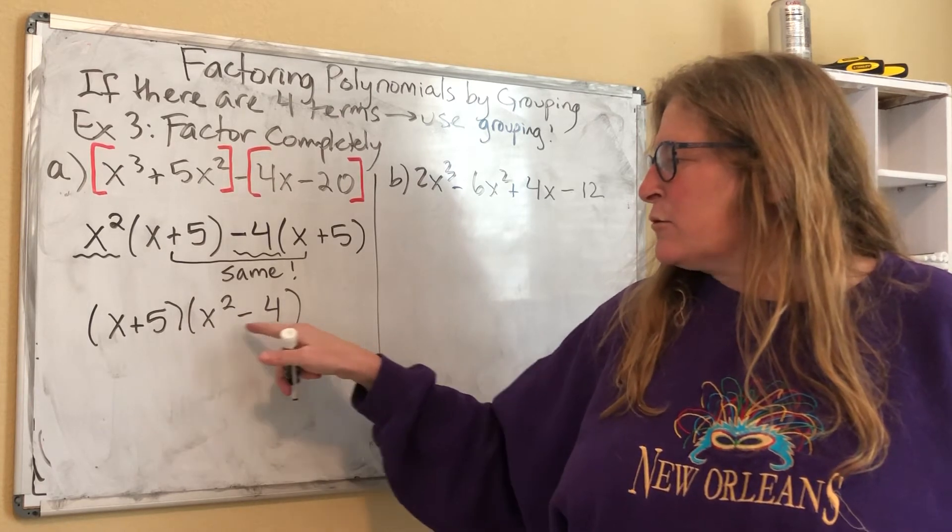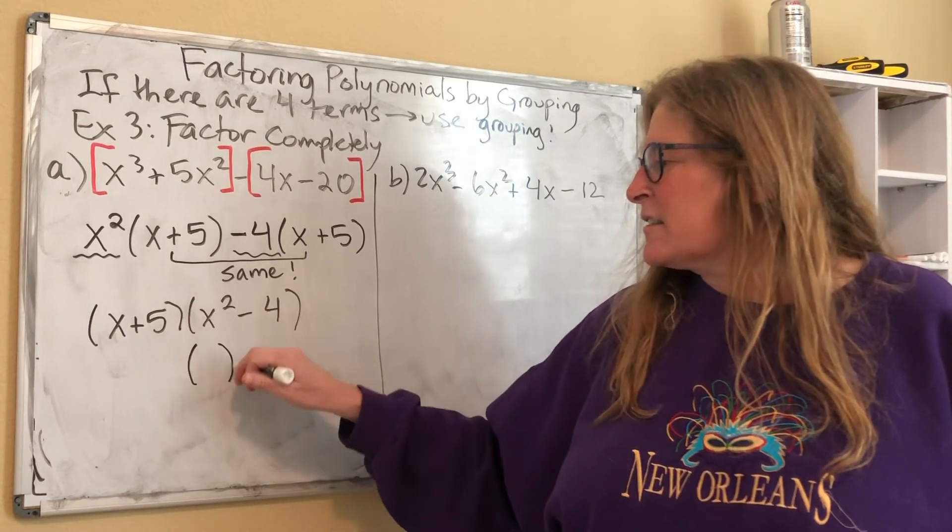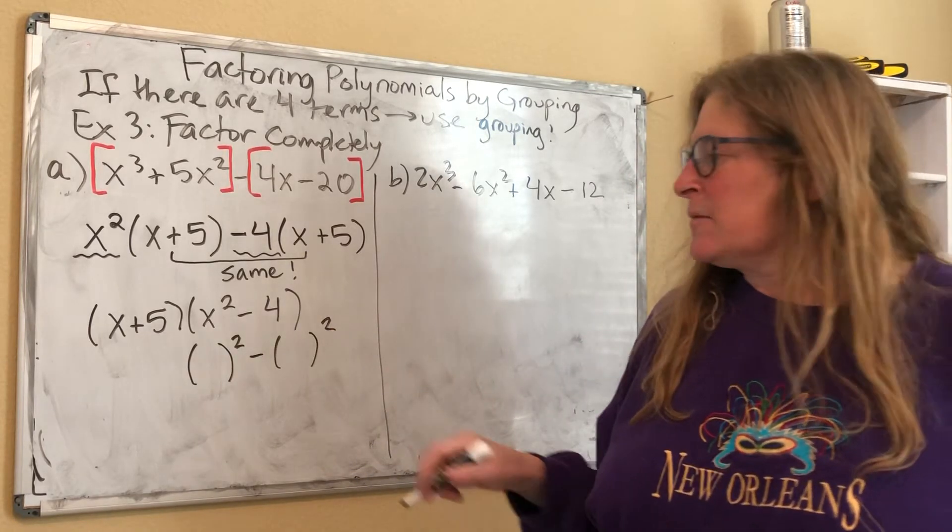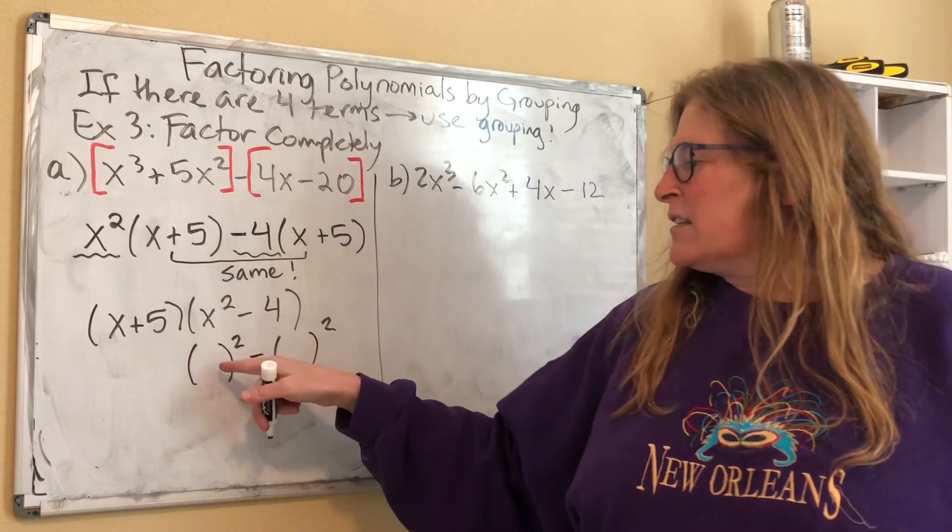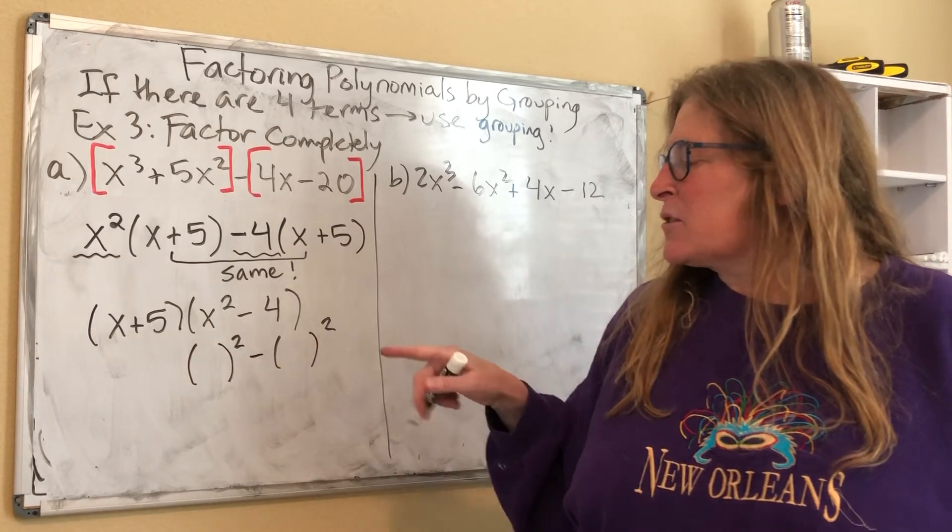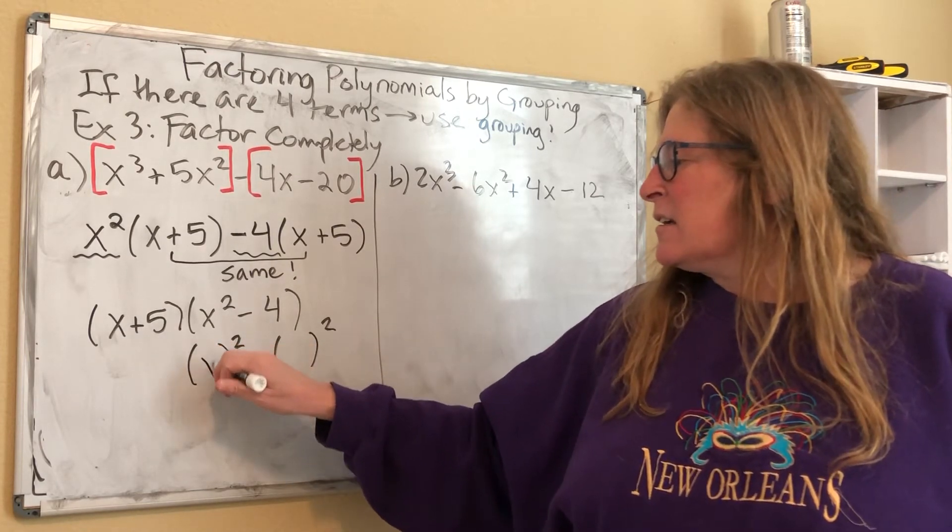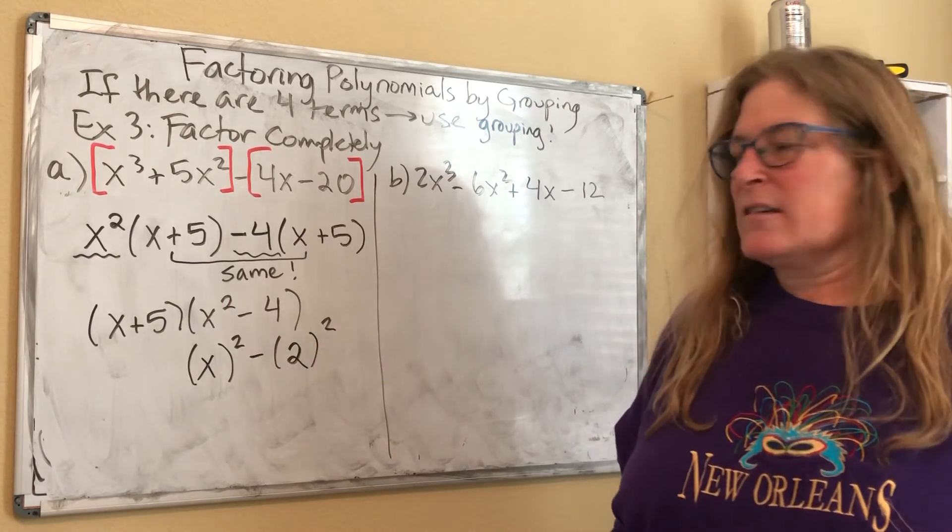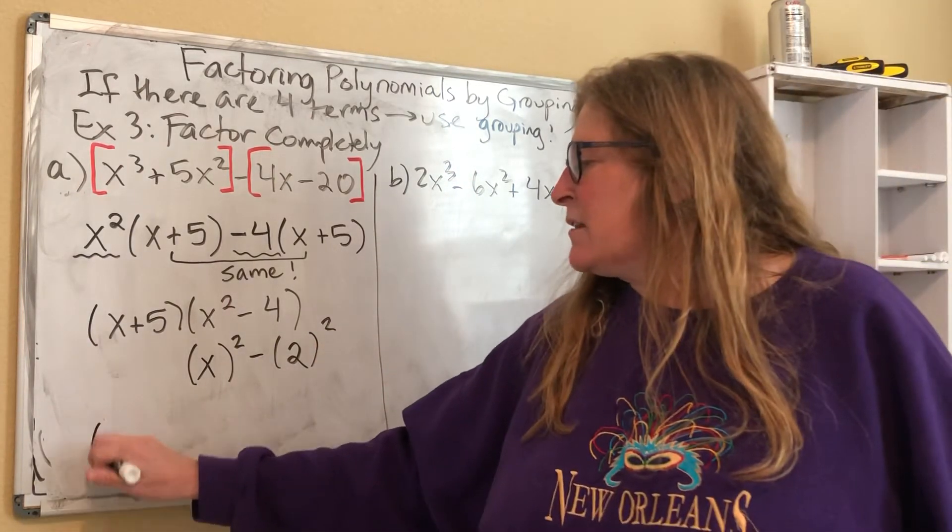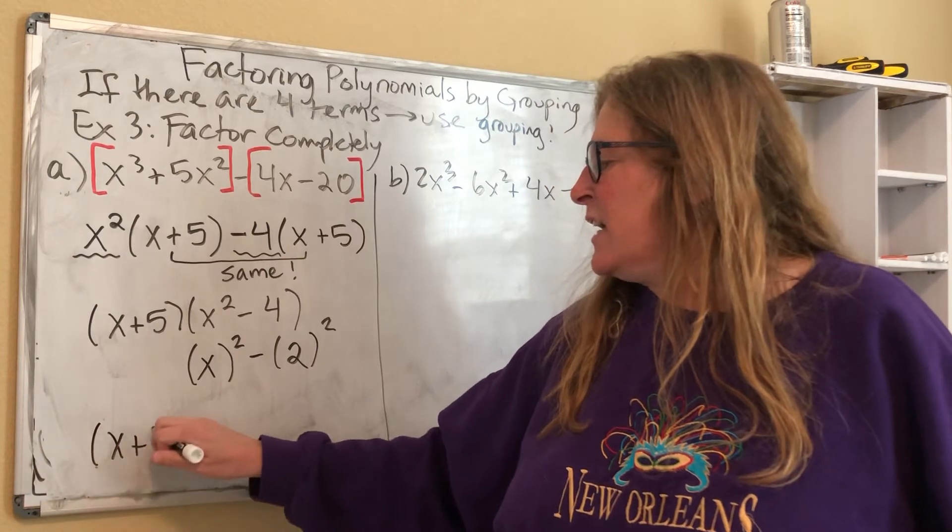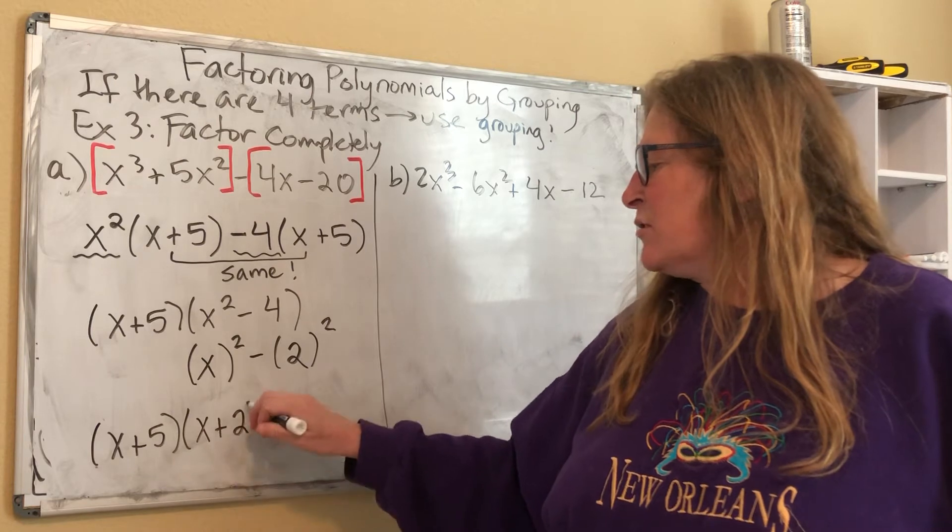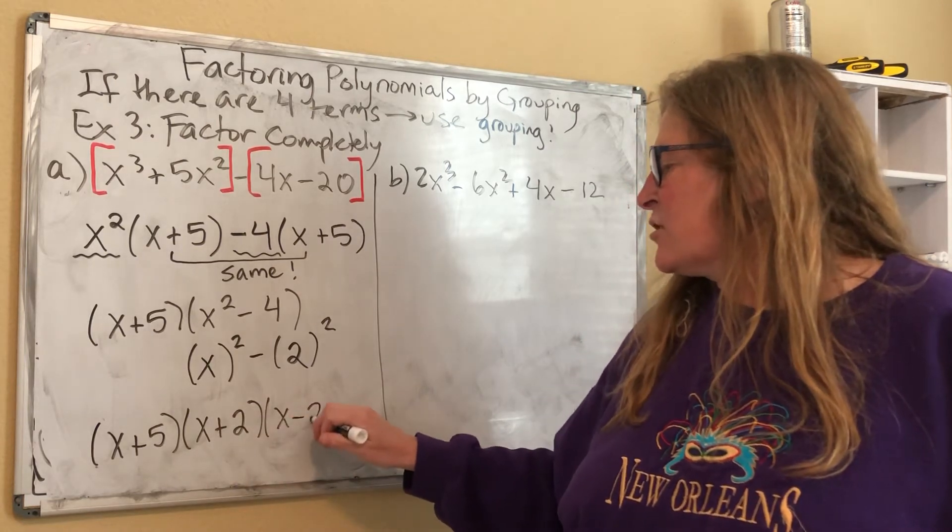There's a minus sign and those are two perfect squares. So watch, let's see, can we do a diagnosis here? Can I write this as something squared minus something squared? And the answer is yes. I can put an x in there and I can put a two in there. So what I end up with is x plus five. And then this x squared minus four factors to x plus two, x minus two.